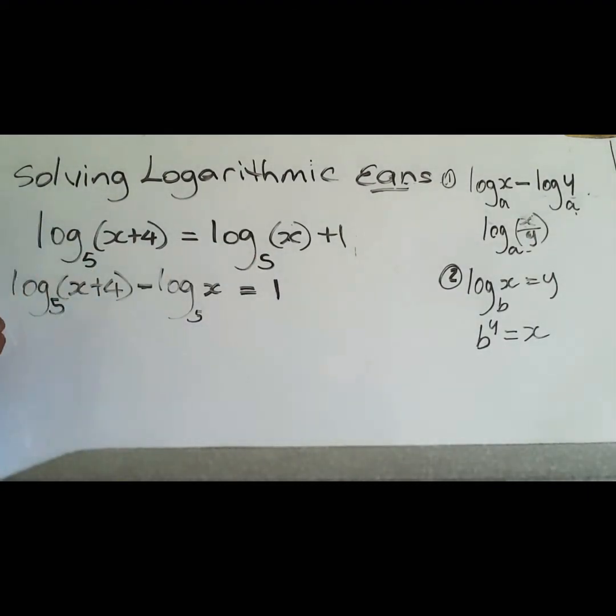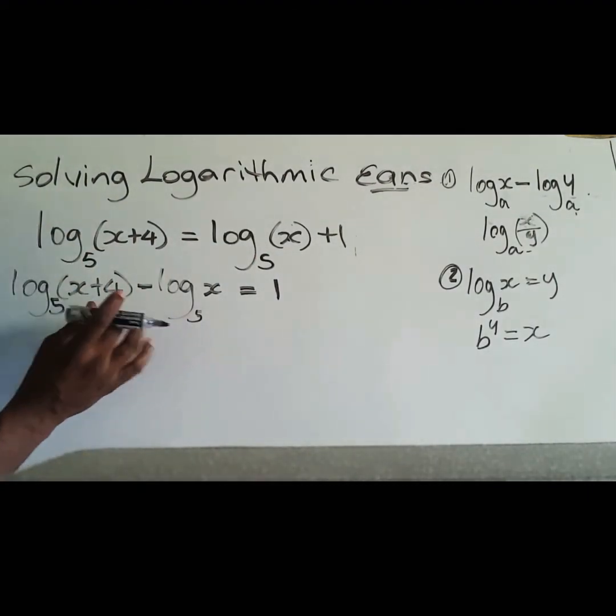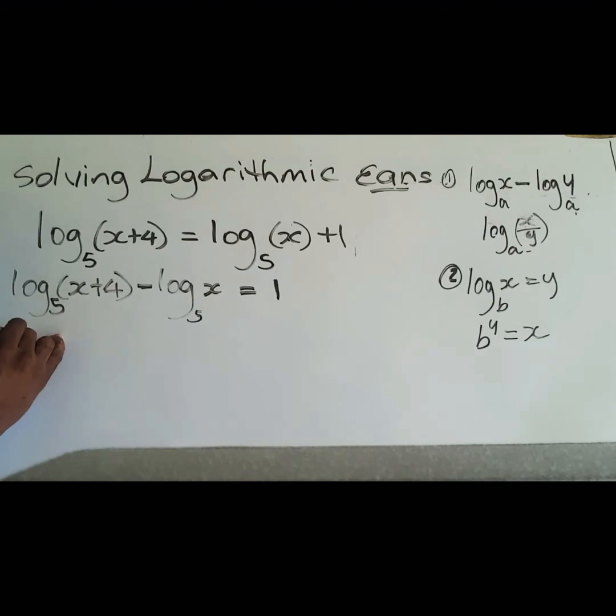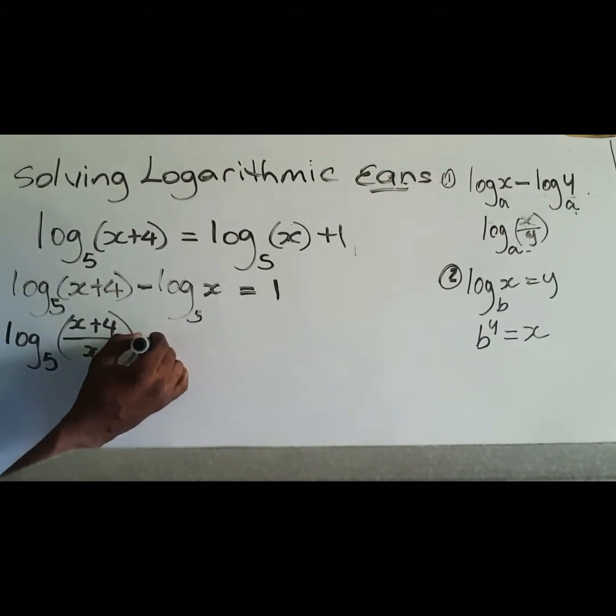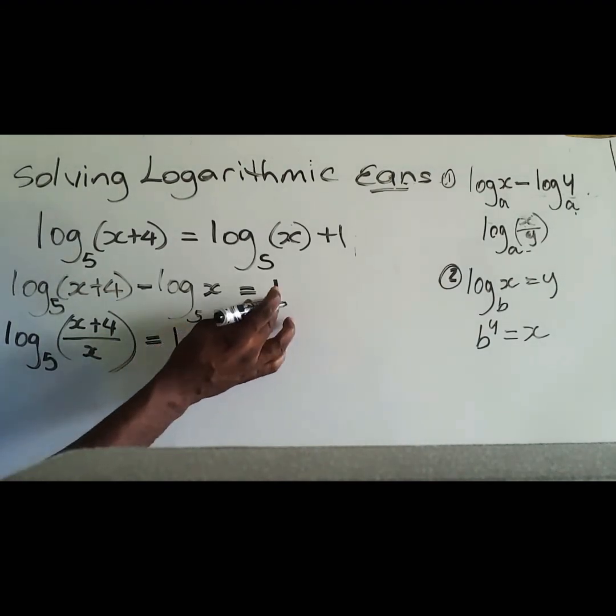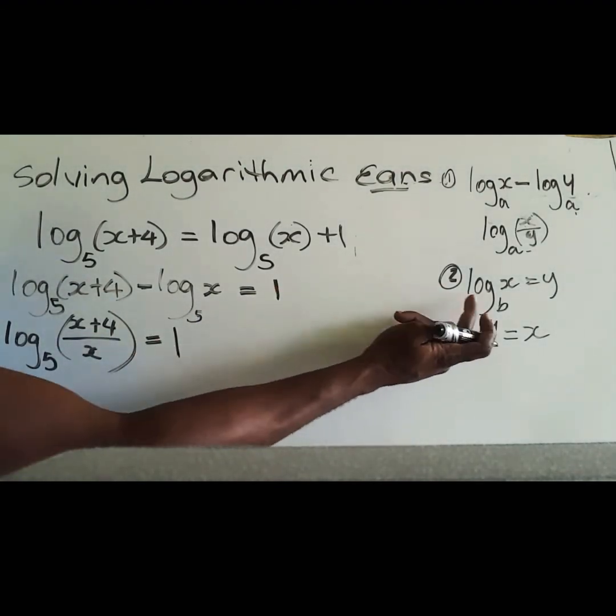All right, so in this case what we're doing now is to do a similar thing. So this is going to be log base 5, we'll have x plus 4 all over x, so writing it as one log because we have two logs, and this is equal to 1.